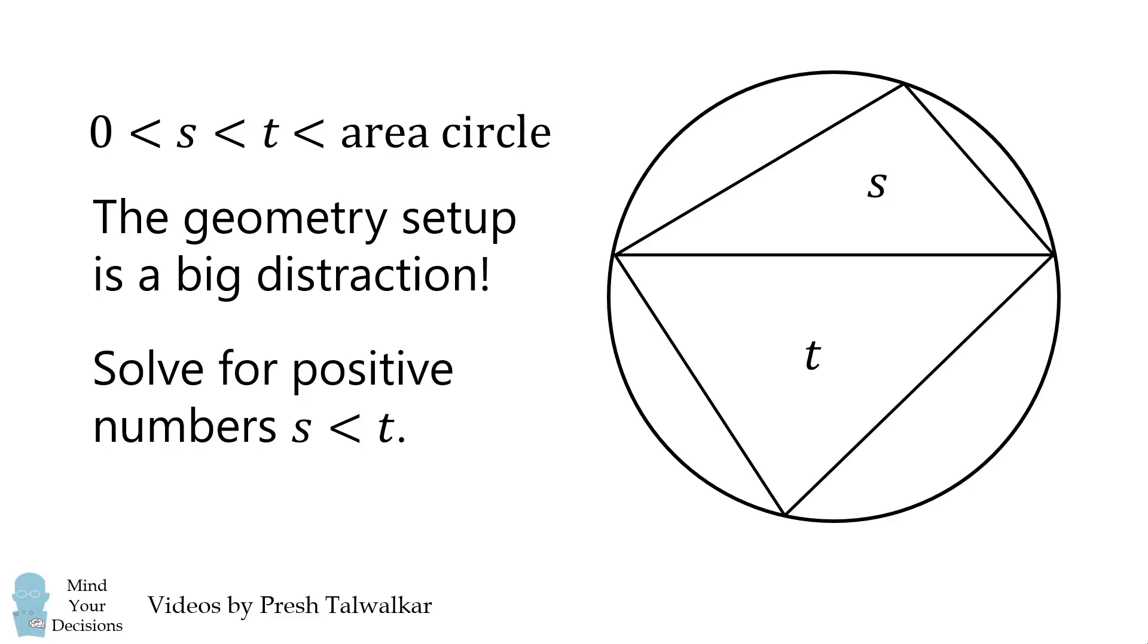You're supposed to recognize this and solve for positive numbers s less than t. So let's minimize this function for positive values of s less than t. We'll first simplify this function.